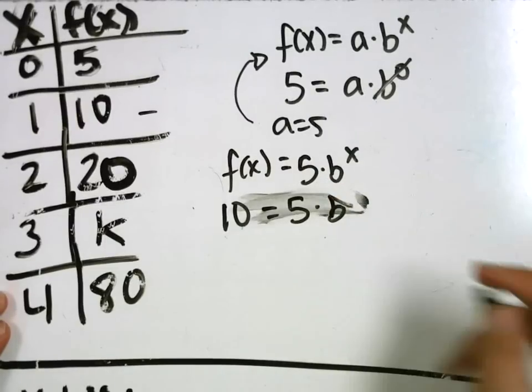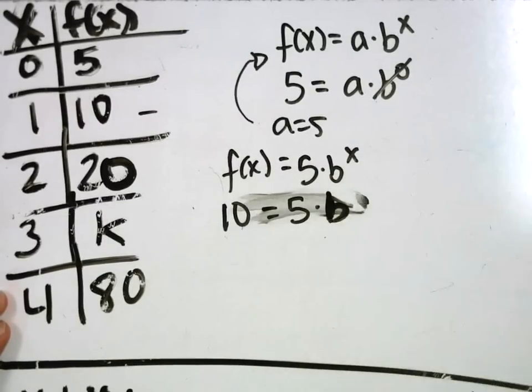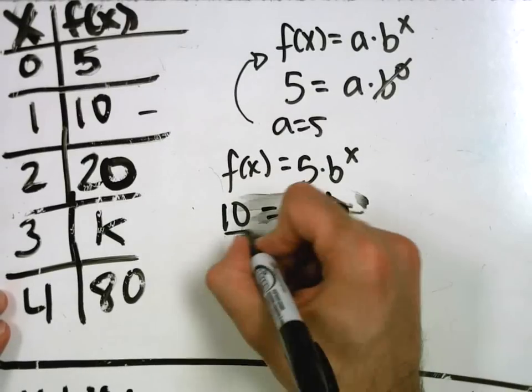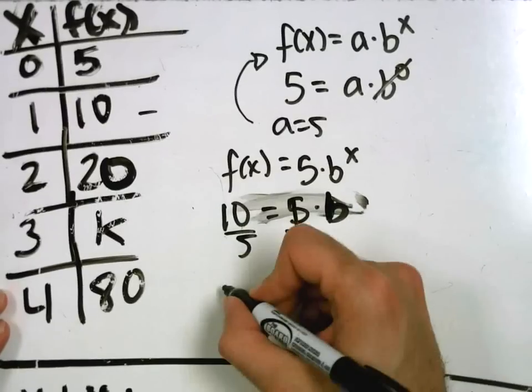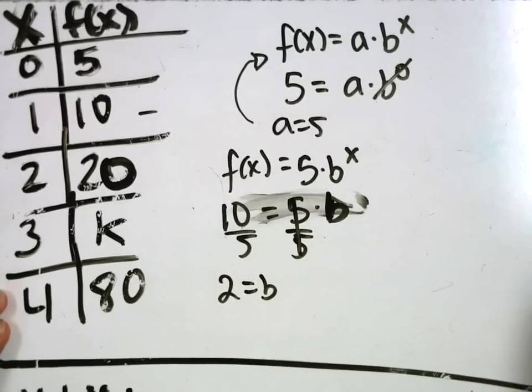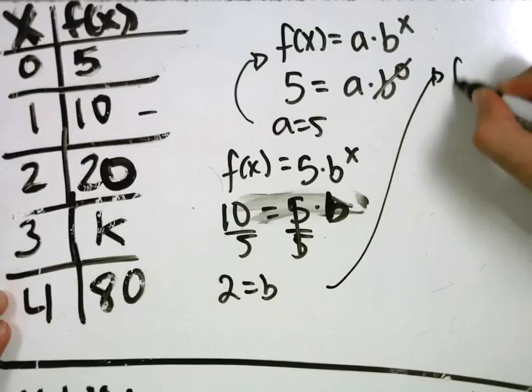So 10 equals 5B. Divide both sides by 5. I get 2 is equal to B. So here we go. I write my formula down. F of X equals 5 times 2 to the X.